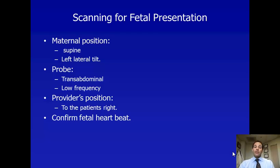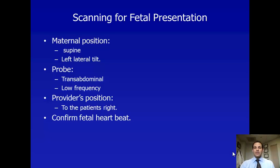When we scan for fetal presentation, a few principles should guide us. The maternal position should be supine. In the third trimester, left lateral tilt helps to relieve aortocaval compression from the gravid uterus at term. The probe used for a third trimester point of care obstetric ultrasound should be a transabdominal low frequency probe. The ultrasound machine and ultrasonographer should be positioned to the patient's right, and the first step is to place the transducer on the gravid abdomen and establish a viable fetus with a heartbeat.